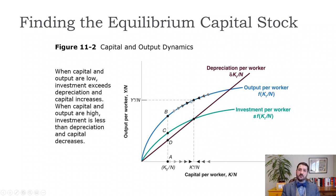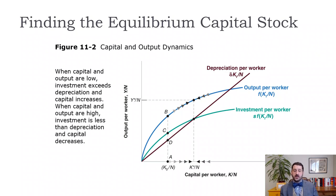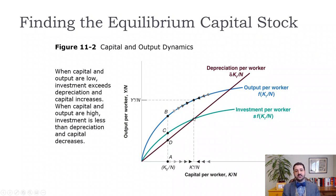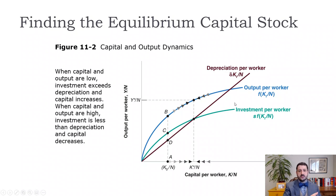The same thing happens if we start to the right: depreciation is greater than investment, so our capital stock will shrink, pushing us left until we arrive at the same equilibrium point. Because of that concave production function — and therefore concave investment function — and the straight-line depreciation, we end up at this equilibrium. If we start out lower, we increase capital per worker until we reach the equilibrium; if we start out higher, we decrease capital per worker until we reach it. This is what we're going to call the steady-state equilibrium.